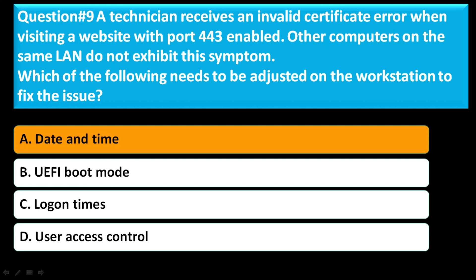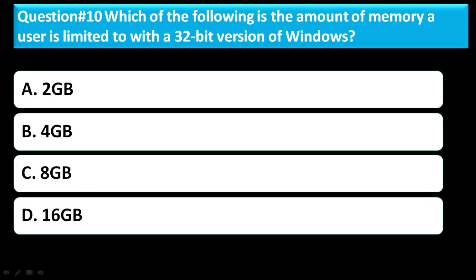Question 10: Which of the following is the amount of memory a user is limited to with a 32-bit version of Windows? Option A: 2GB. Option B: 4GB. Option C: 8GB. Option D: 16GB. The correct answer is B — 4GB.